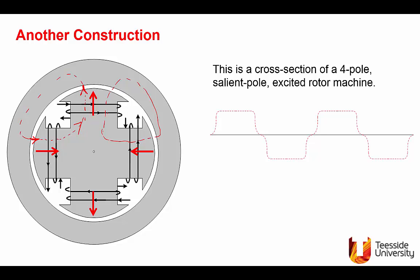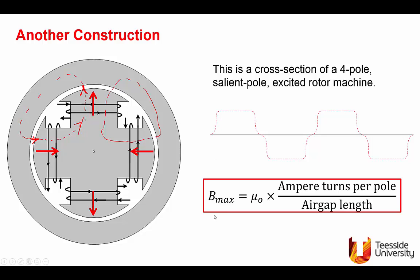If you follow the air gap, you will find that the distribution is as shown. And again, the flux density, the maximum value of the flux density, is mu naught N per turns per pole, divided by the air gap length.